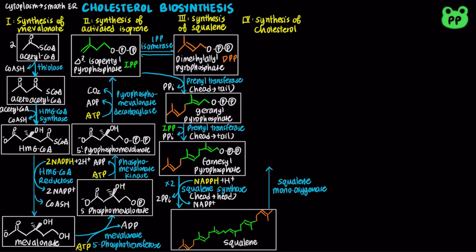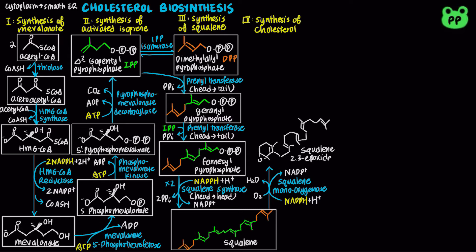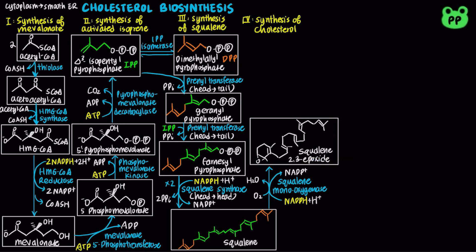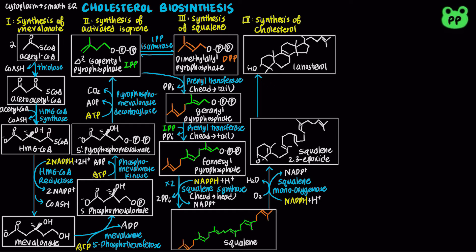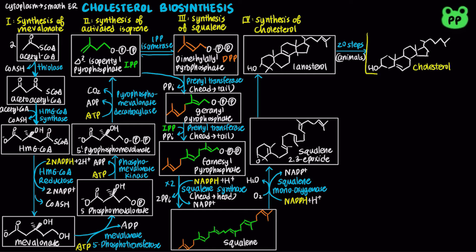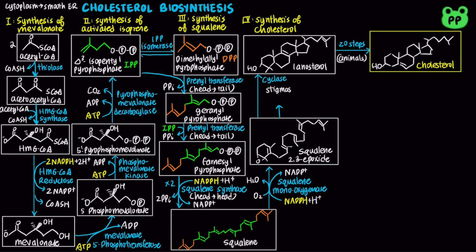During the fourth stage, squalene monooxygenase adds one oxygen atom from O2 to the end of the squalene chain, forming squalene 2,3-epoxide; the reduction of the other oxygen atom is coupled to the oxidation of NADPH to NADP+. In animals, squalene 2,3-epoxide undergoes cyclization to form lanosterol, which contains the four-ring steroid nucleus, and is finally converted to cholesterol in about 20 reactions. In plants it gives rise to stigmasterol, whereas in fungi it gives rise to ergosterol.